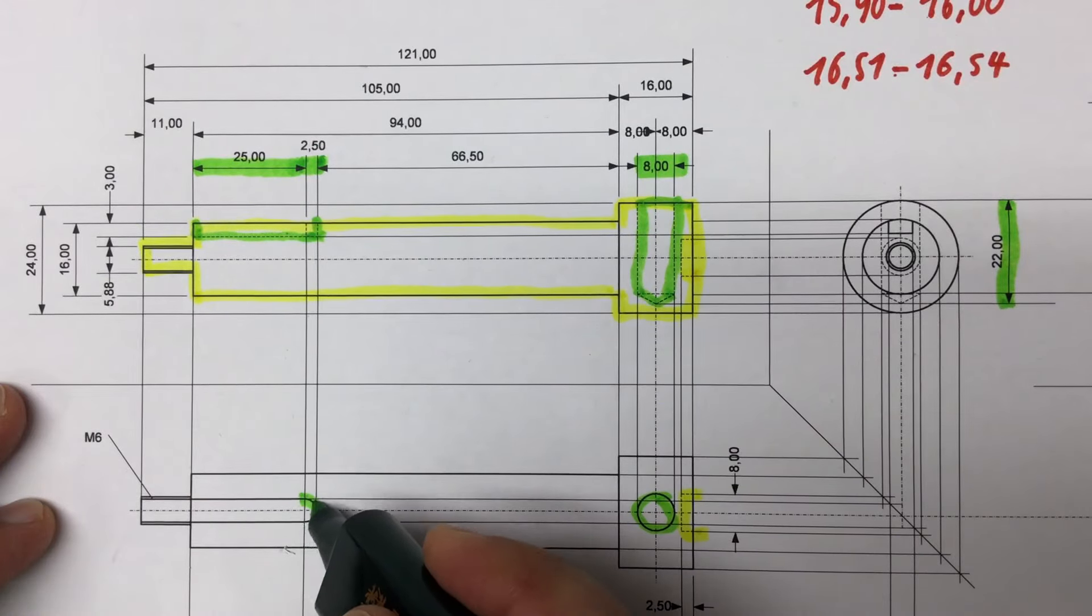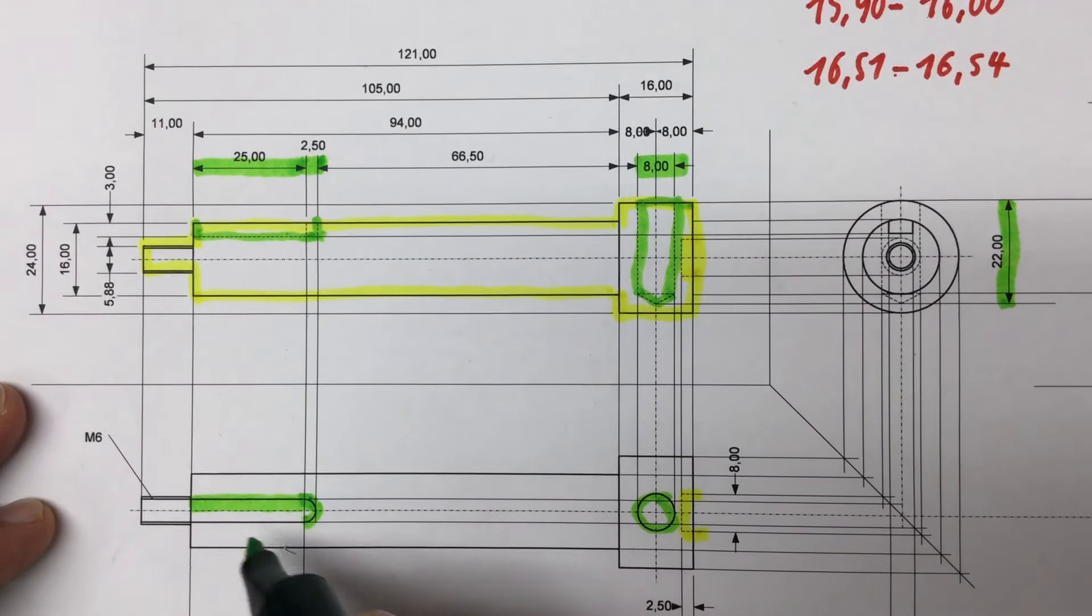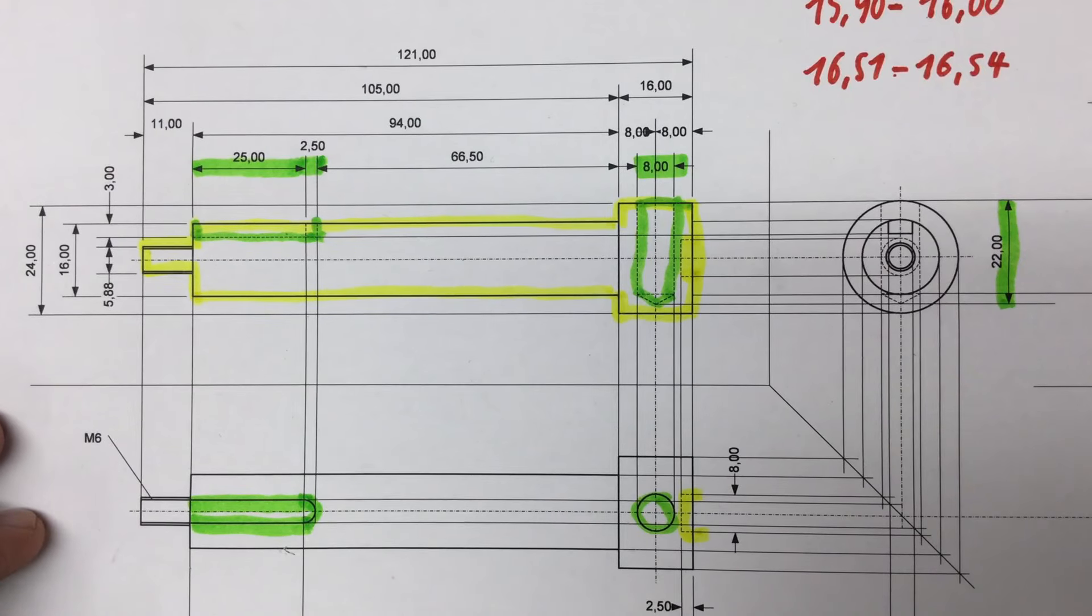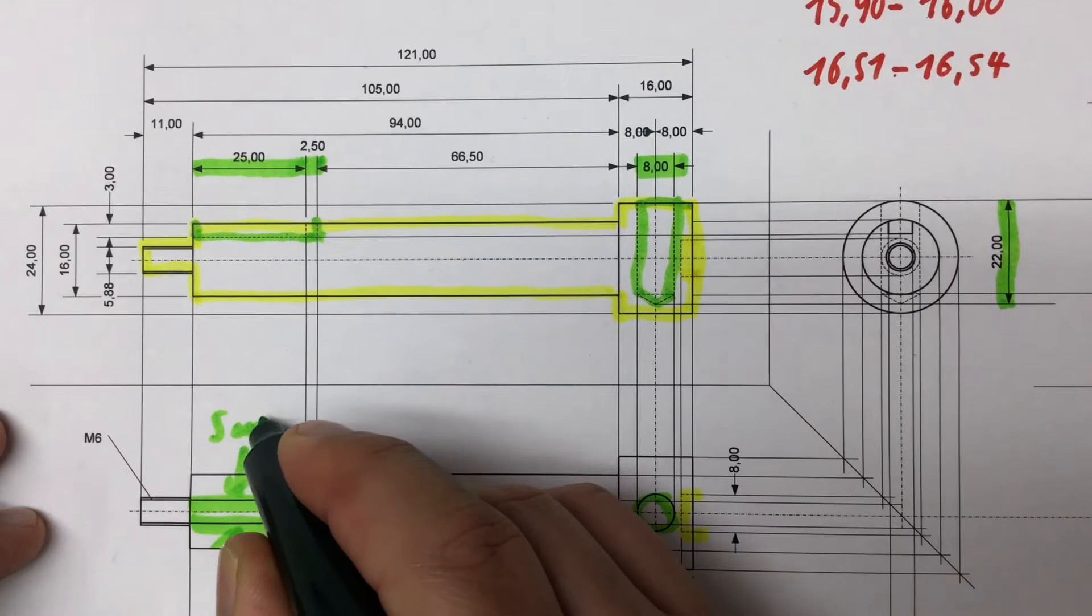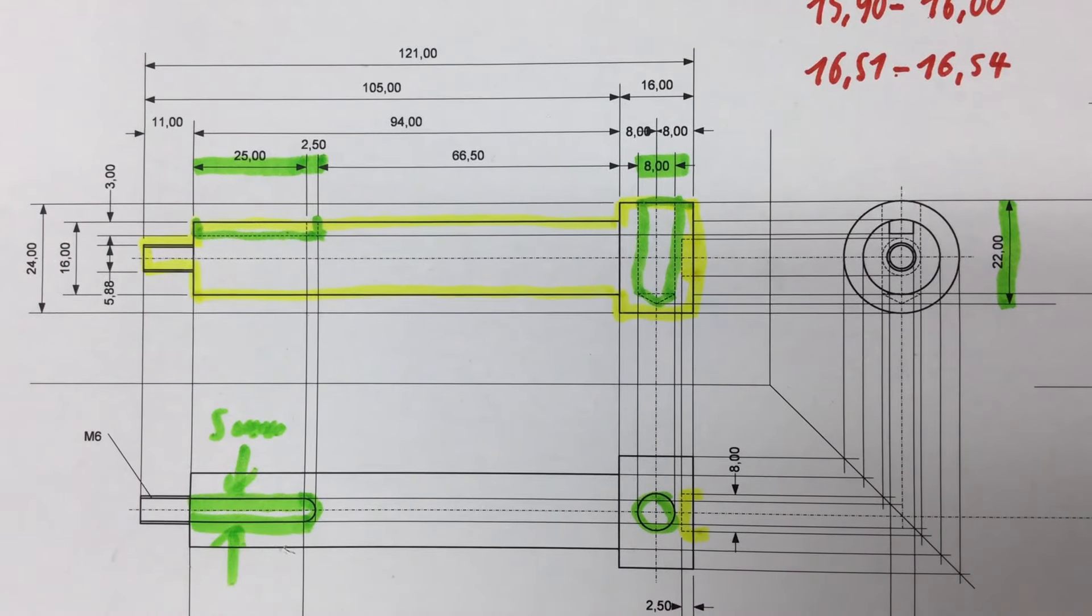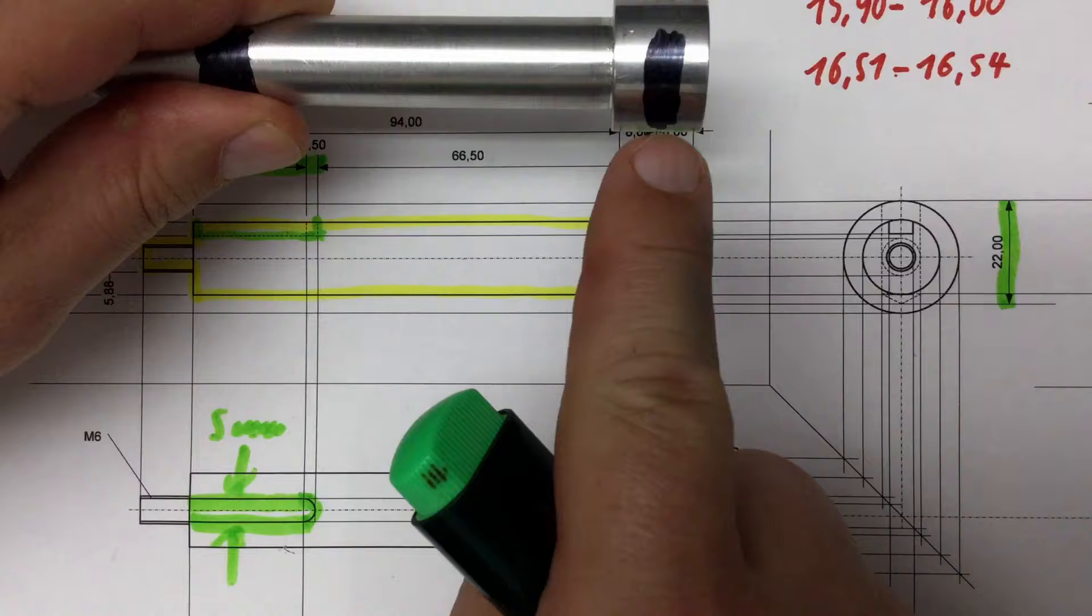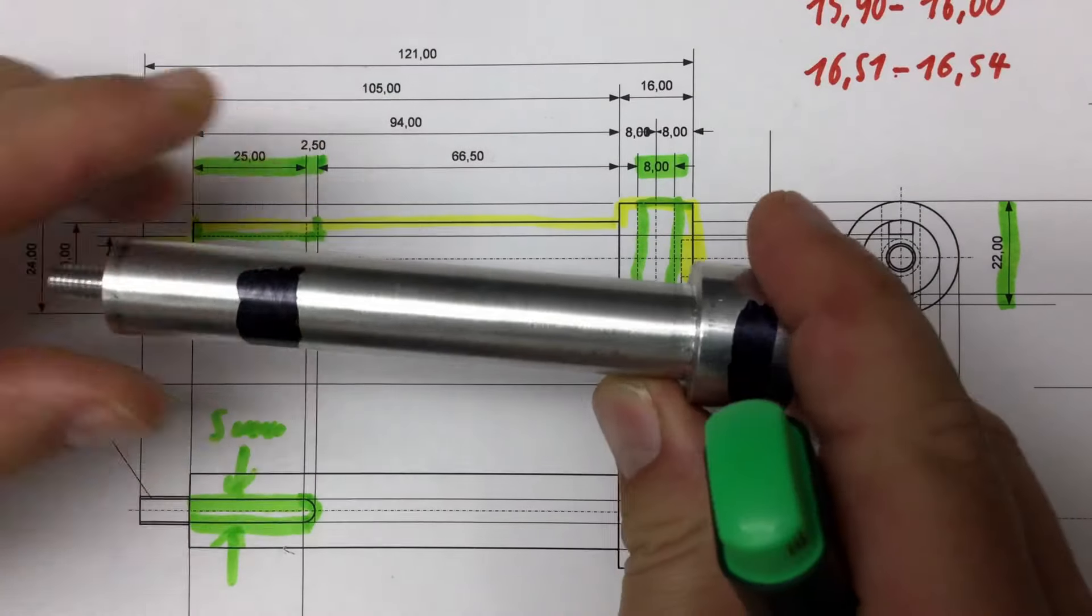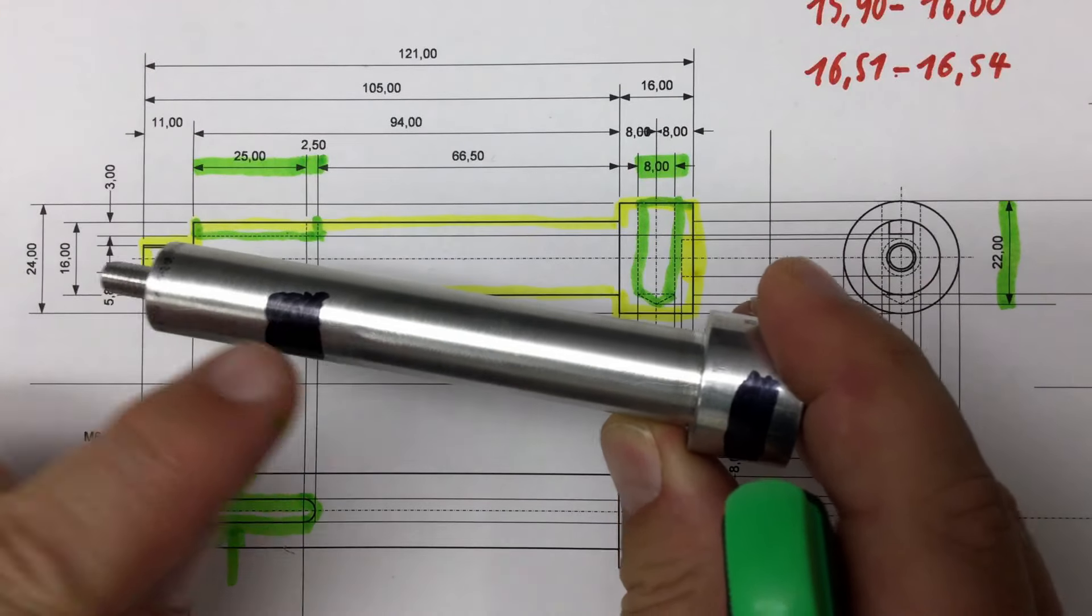Its width should be 5 mm, is that somewhere recorded here on the plan? Obviously not but it's 5 mm wide. So one hole here, one slot here, that's it.